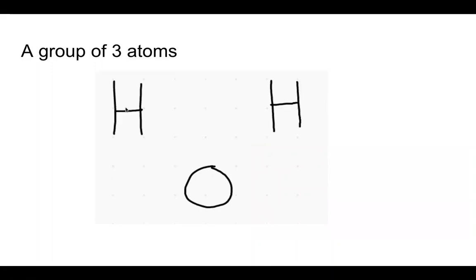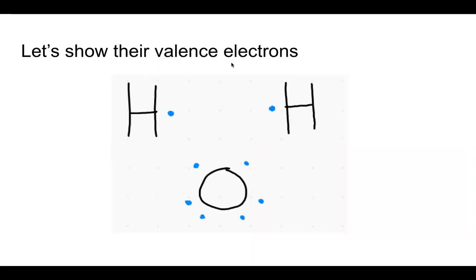Let's have a group of three atoms right here: H, O, and H. Three different atoms. Let's show their valence electrons. Hydrogen's got one, that's why there's one dot. Oxygen has six.